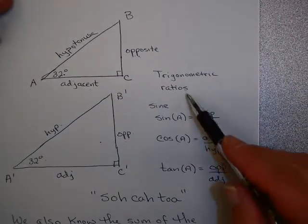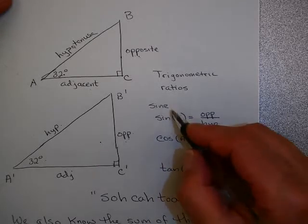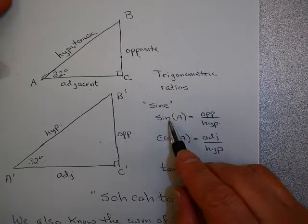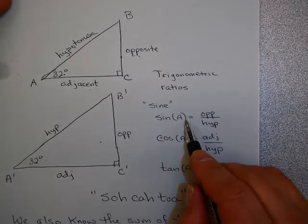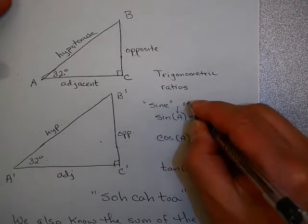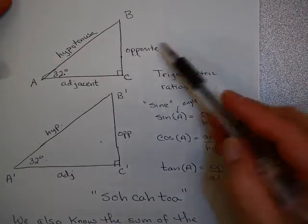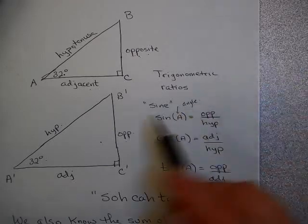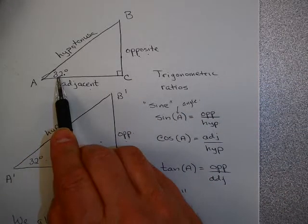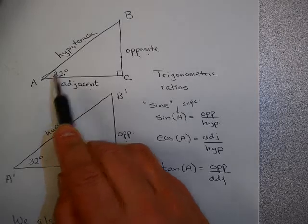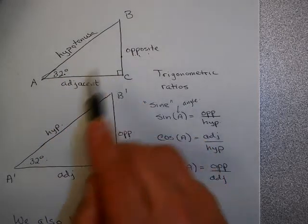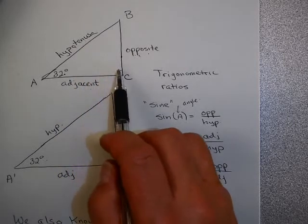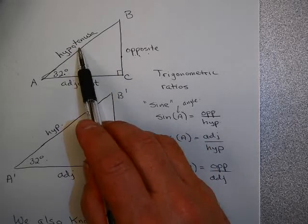In mathematics, we define what are called the trigonometric ratios. The first one is called sine, and we denote that as sin(A). This refers to an angle — the sine of an angle — and that equals the opposite side over the hypotenuse. If you're standing at the 32-degree angle, the opposite side is the one across from you, the adjacent side is next to it, and the hypotenuse is always opposite the 90-degree angle.